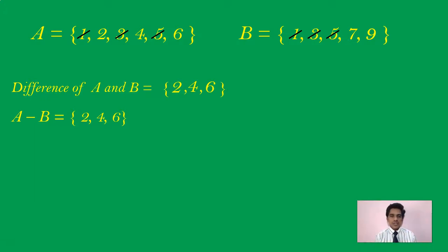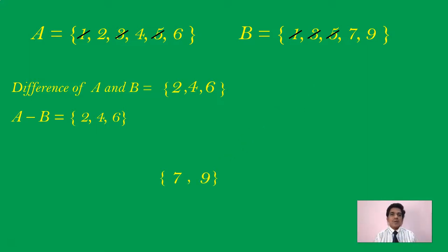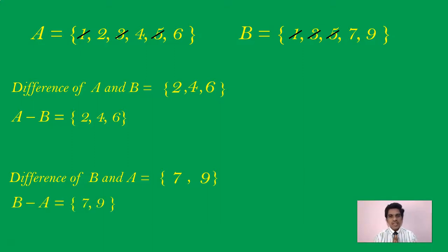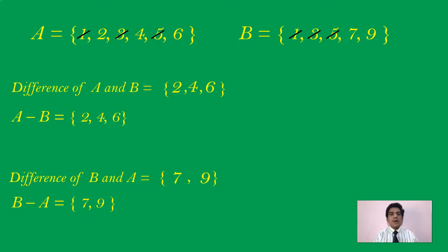And this is how you calculate the difference of two given sets. A minus B means the elements that are only in A but not in B — cancel the common elements. We are left with 2, 4, 6. Similarly, what are the elements left in B? They are 7 and 9. So the difference of B and A, written as B minus A, is set of {7,9}.